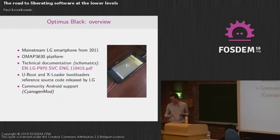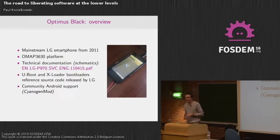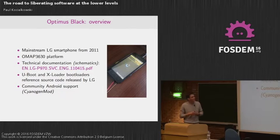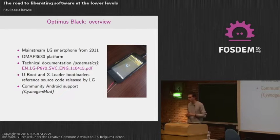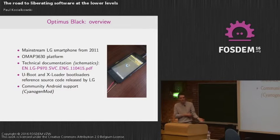The Optimus Black is the first example — a mainstream device from 2011 that I've been working on to add Replicant support. Replicant is a fully free version of Android. This device is running with an OMAP 3630. It's pretty old but quite interesting because we have great documentation about it, which is quite rare nowadays. We also have the technical documentation of the device itself, which leaked on the Internet. The bootloader used by the main processor is free software — it's U-Boot and xLoader, and that source code was released by LG.